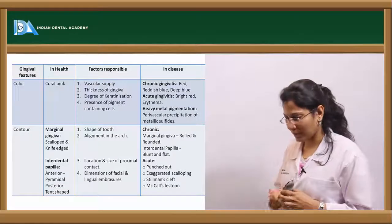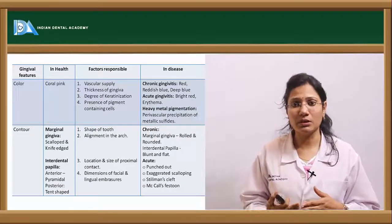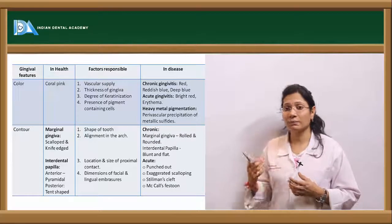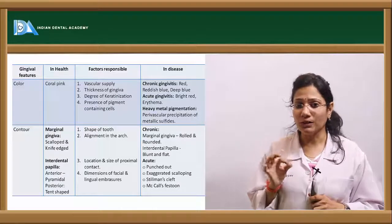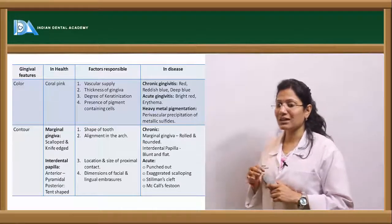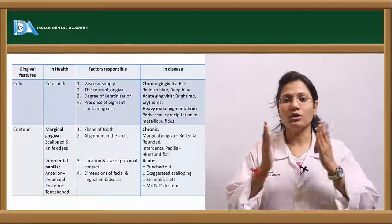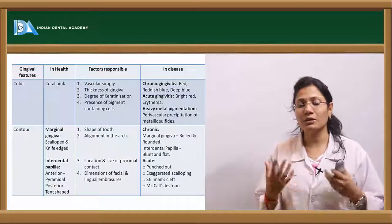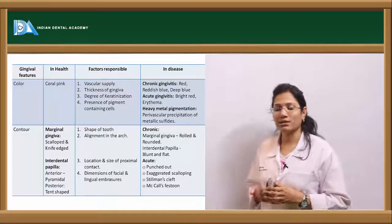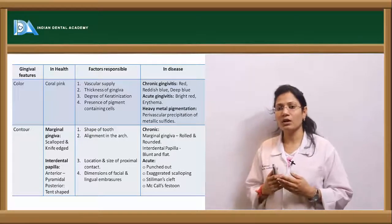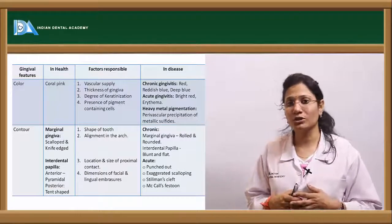If there is ingestion of heavy metals like lead, bismuth, or mercury, there can be heavy metal pigmentation. This is because of the perivascular precipitation of these heavy metals in the circulation. In gingivitis, there is increased and dilated vasculature, so there can be precipitation of these minerals into the perivascular area, giving a typical color. The color caused by lead is called a Burtonian line.